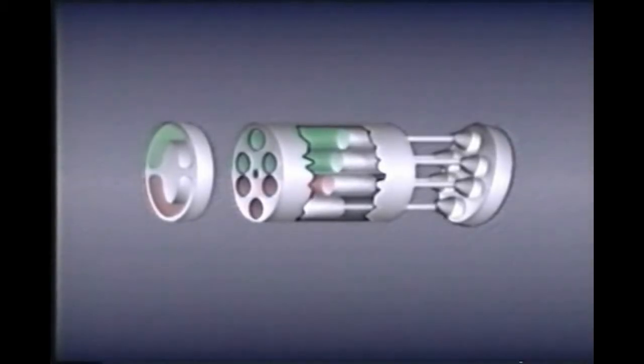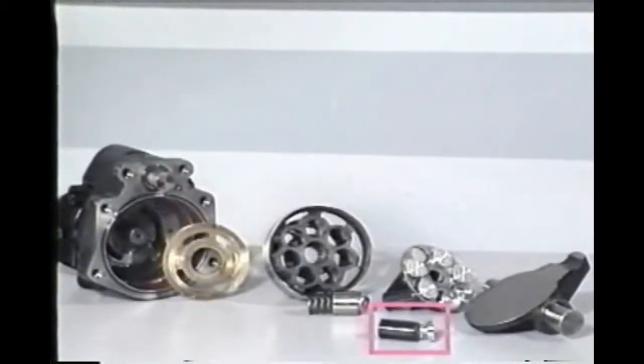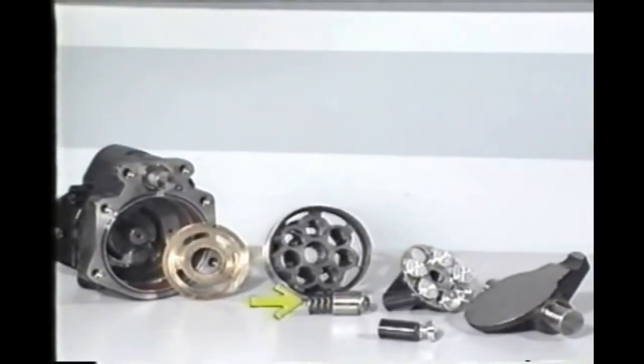The axial piston pump also has pistons, but these fit into piston bores in a cylinder barrel. A shoe plate and a bias spring hold the piston shoes against a plate called a swash plate. The pump's inlet and outlet are through a port plate at one end. In operation, everything but the swash plate and the port plate rotate with the shaft.